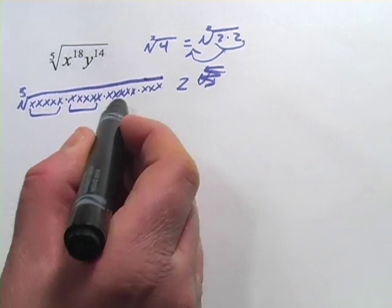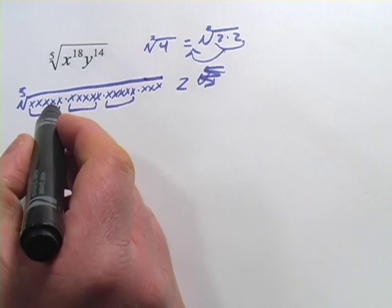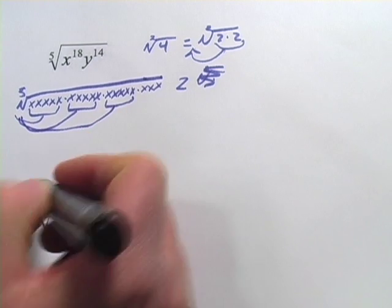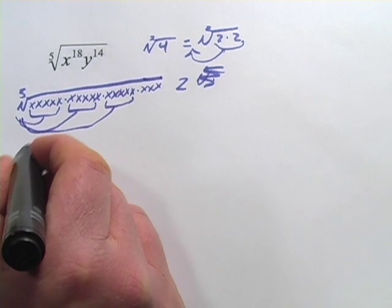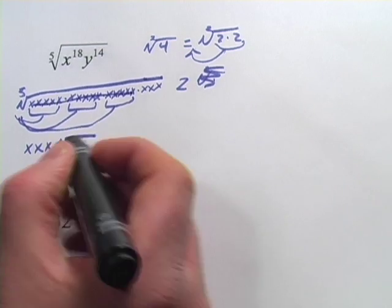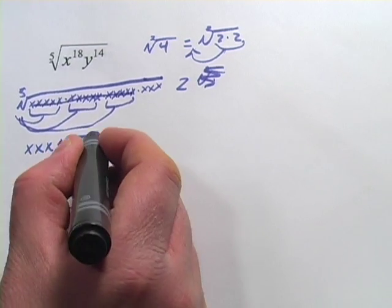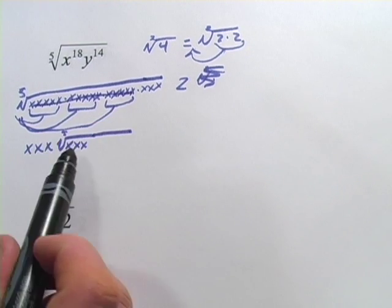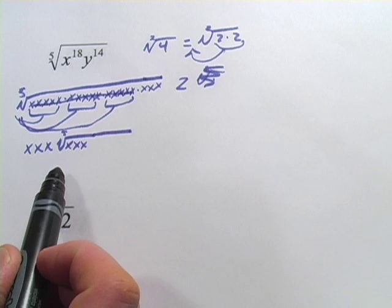...any groups of five that are multiplied together we can take out. So there's one x that comes out, there's two x's that come out, there's three x's that come out. So what we get on the outside is three x's multiplied by each other. And what's left, after all these are gone, is just three x's. So that's what happens when you take the fifth root of x to the eighteenth, although we still need to simplify this a little bit.